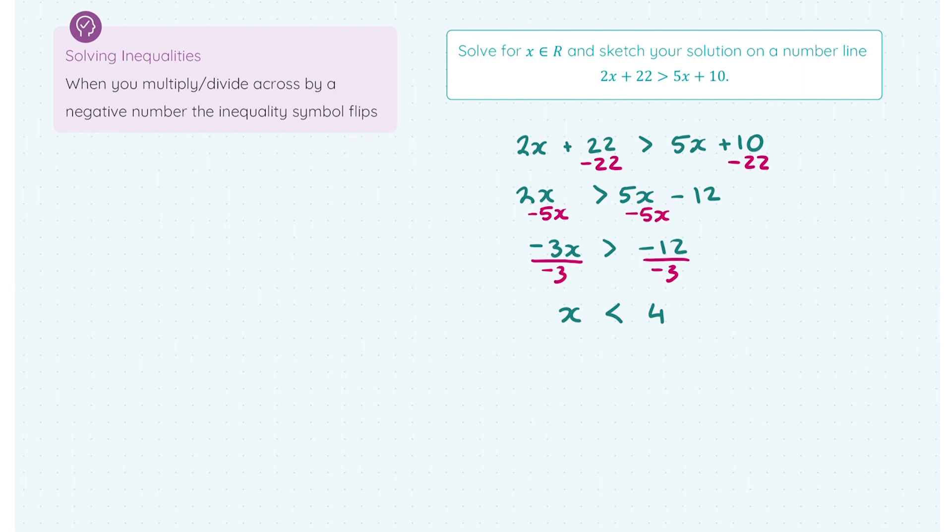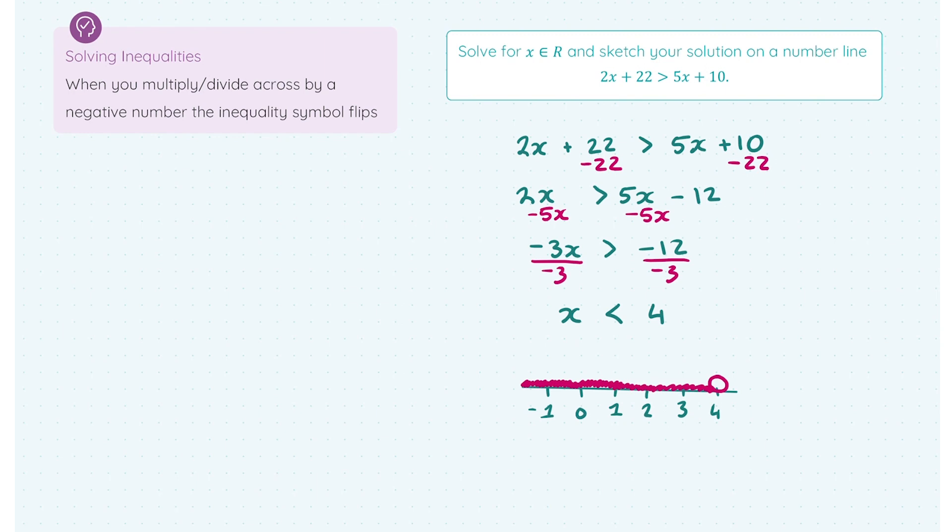So to plot this on a number line, we're going to plot all the numbers below or less than 4. So because the real numbers include every possible number, we're going to be using a colored in line here. But we're going to mark off our starting point. We're less than 4 here. So I'm going to put an open circle on 4. And I'm going to include all the numbers below 4 by using a shaded line the whole way down the number line. I'm using the shaded line to represent all the numbers less than 4. And because the solution keeps going down towards minus infinity, I'm going to draw an arrow in the direction of the movement.